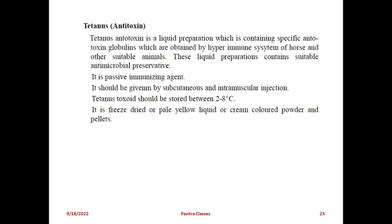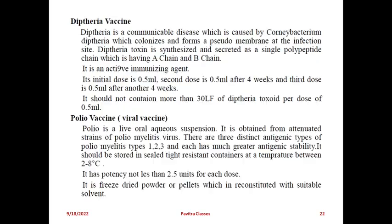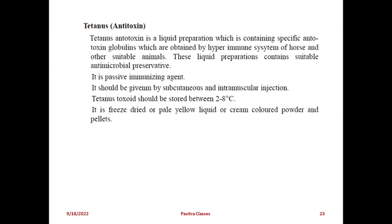The tetanus antitoxin is a liquid preparation containing specific antitoxin globulins obtained from the hyperimmune system of horses or other suitable animals. We take it from these animals and inject it into human beings. This liquid preparation contains suitable antimicrobial preservatives. It is a passive immunizing agent. It should be given by subcutaneous and intramuscular injection. Storage is at 2 to 8 degrees Celsius. It is a freeze-dried pale yellow or cream-colored powder. These are some general methods for the preparation of vaccines.